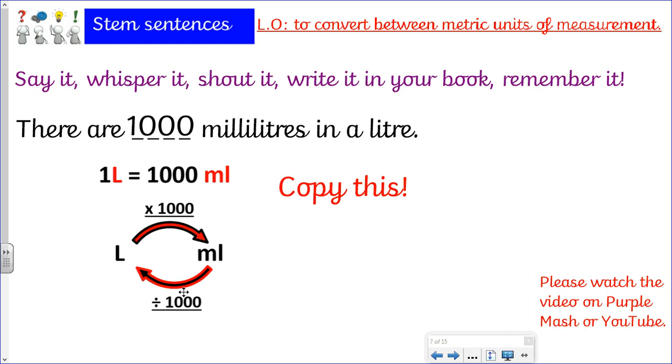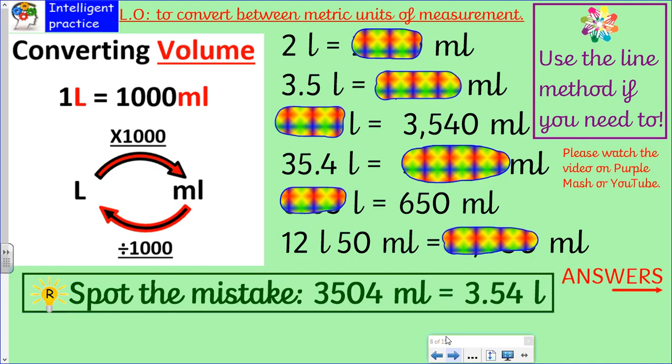So litres, we times by a thousand to get millilitres. And if we've already got the millilitres, we divide by a thousand to work out how many litres there are. So the next bit is intelligent practice for volume capacity.